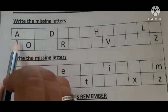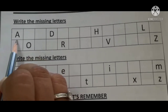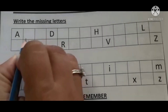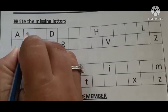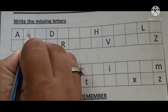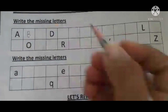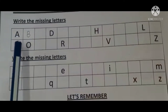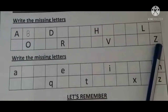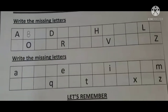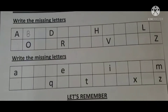Here it is given A. After A, what comes is B. In the same way, you have to complete both the boxes.